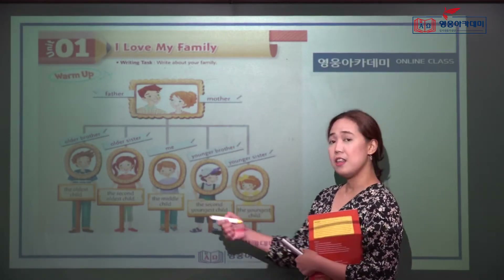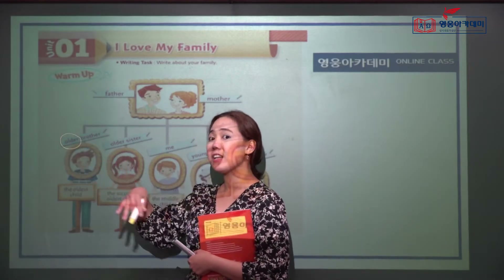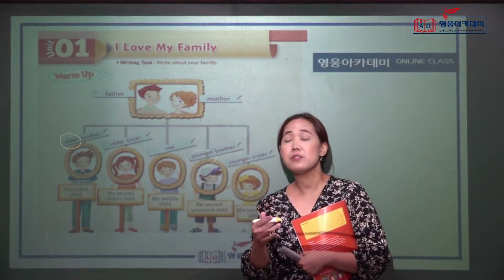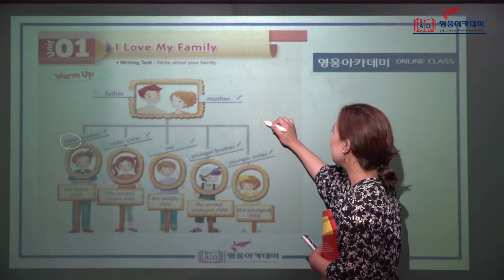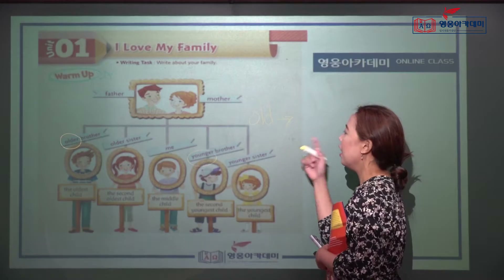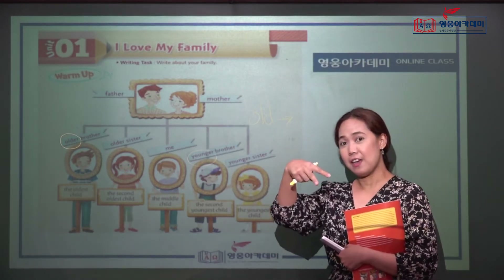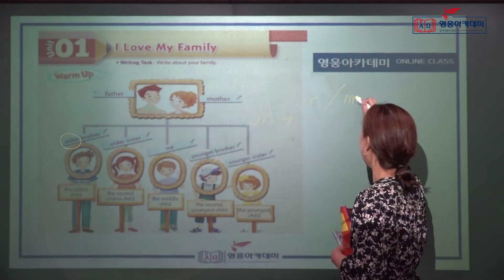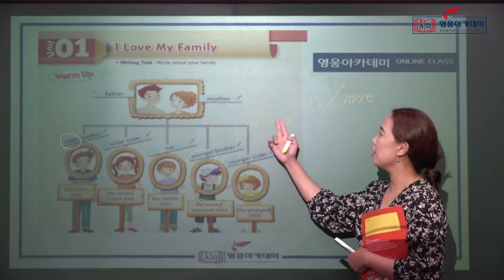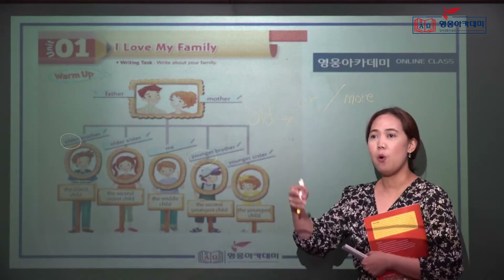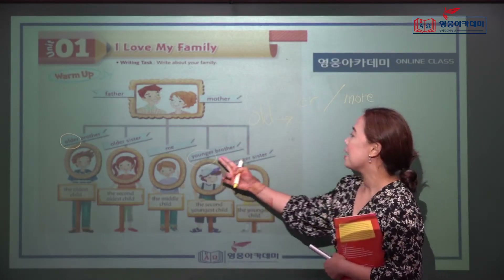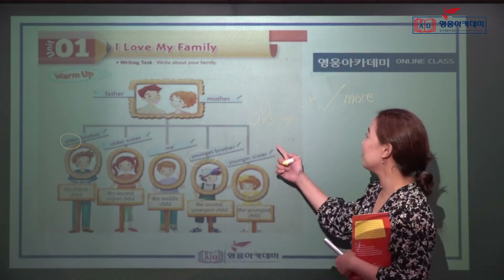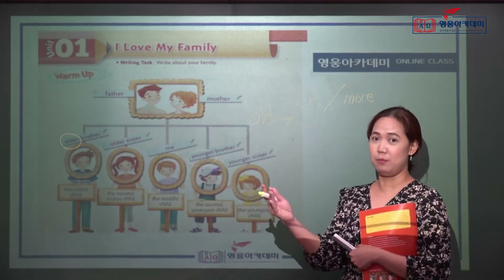Here you can see the adjectives 'older' and 'younger.' When do we use these? The base adjective is 'old.' If you are comparing two things or two persons, you add '-er,' or you can also add 'more.' So instead of 'more old,' you say 'older than.' The same with 'young' — instead of 'more young,' you say 'younger.' This is the comparative form of an adjective.